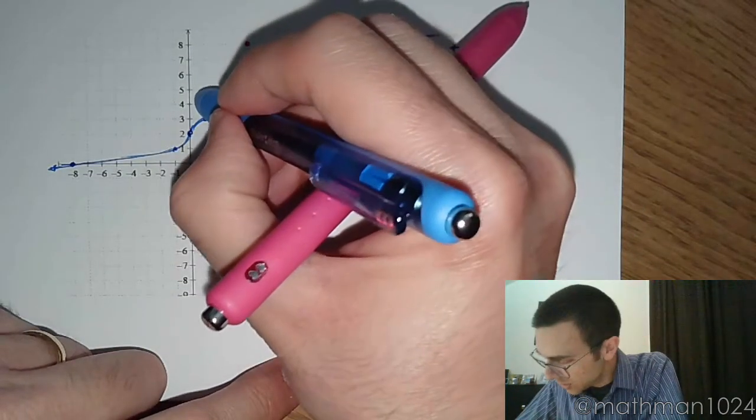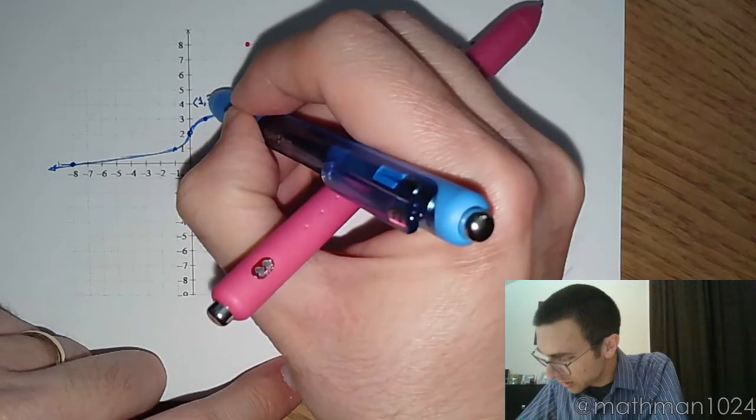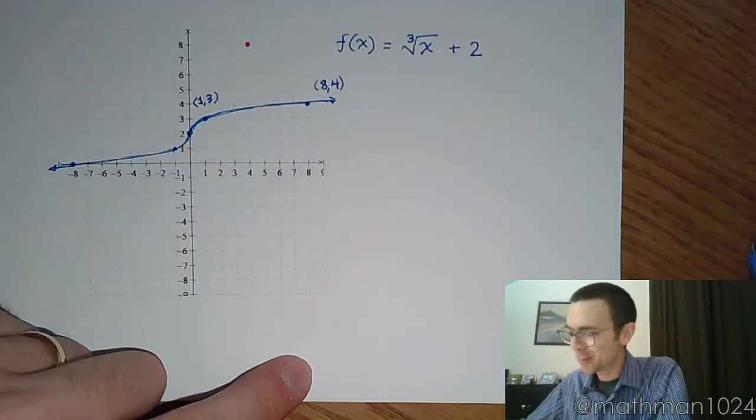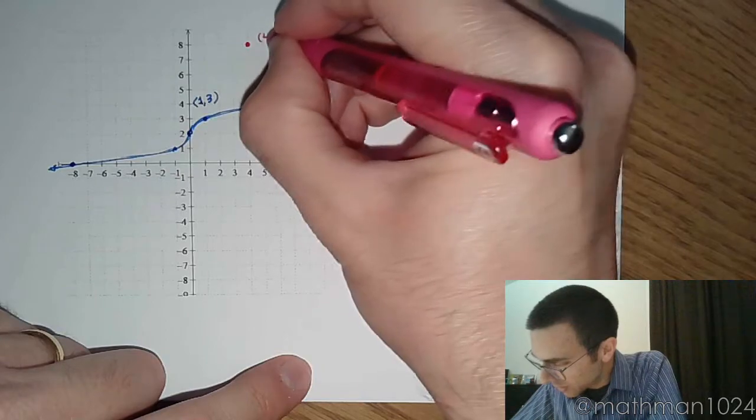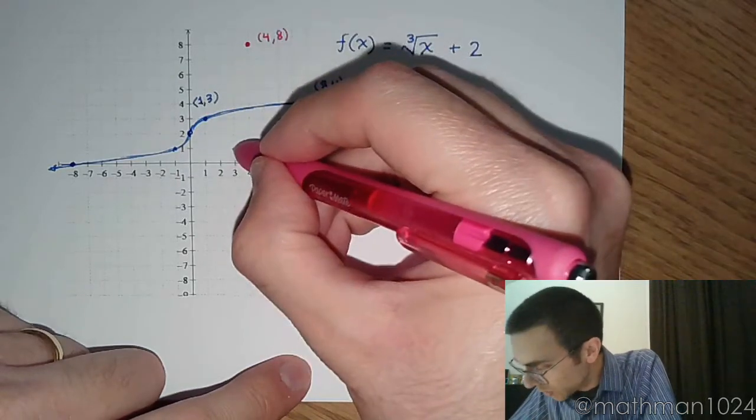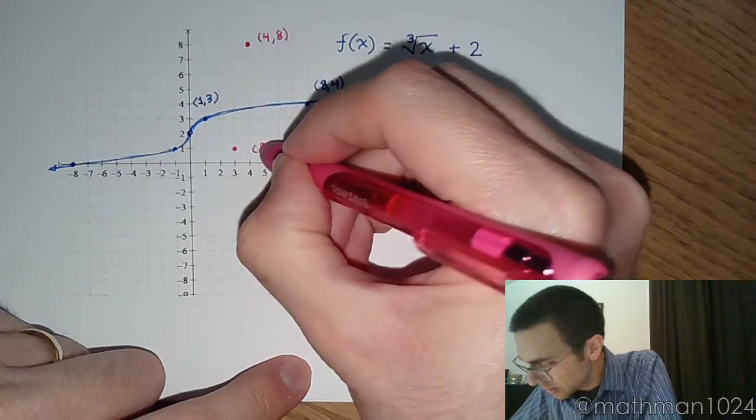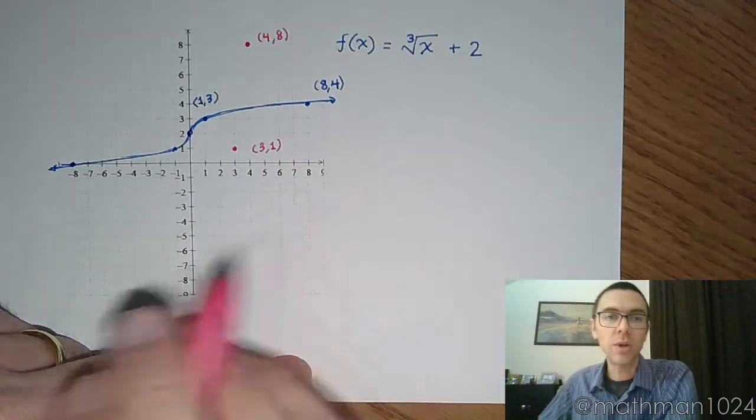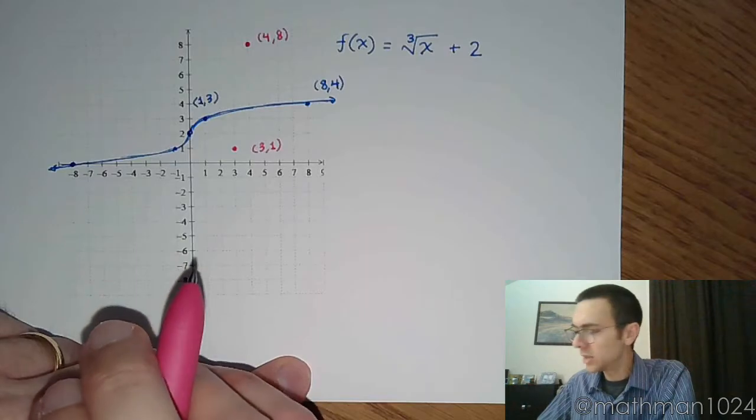And then we've got this guy, who's the ordered pair (1, 3). Okay, so let's mark that this was (4, 8). (1, 3) is going to correspond to the ordered pair (3, 1). And let's just keep going here.